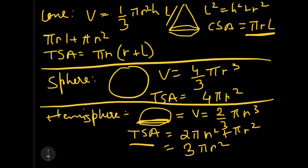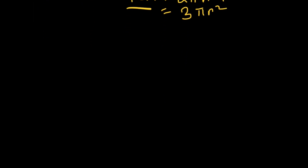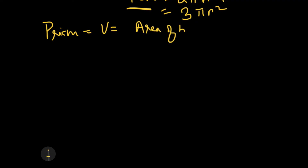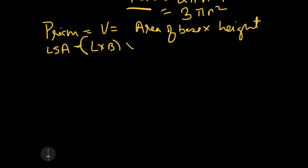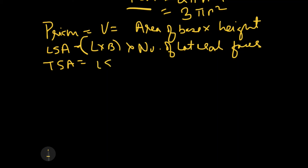For prisms in general, the key is knowing how many sides the base polygon has, because the number of lateral faces equals the number of base sides. Volume of any prism = area of base × height. The lateral surface area = (length of one lateral face × breadth) × number of lateral faces, since all lateral faces have the same area. Total surface area = LSA + 2 × base area.